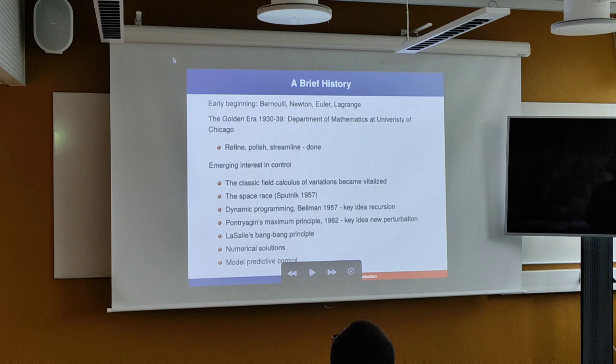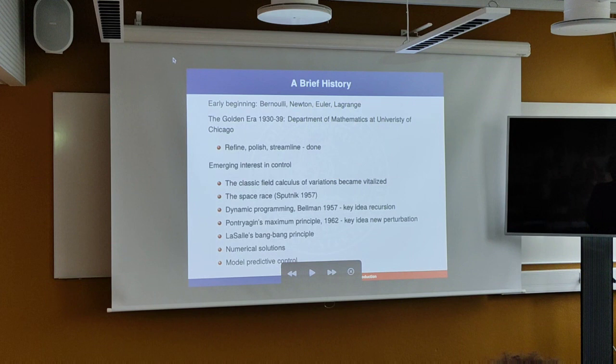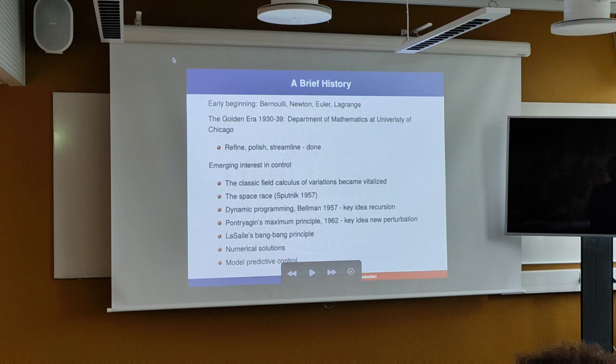It all started with calculus of variations — a classical part of mathematics where we have people like Bernoulli, Newton, Euler, and Lagrange. There was a golden era from 1930 to 1939 at the Department of Mathematics, University of Chicago, where they essentially cleaned the whole field up. They refined, polished, and streamlined. There are some excellent books on this. By 1940, calculus of variation was essentially done.